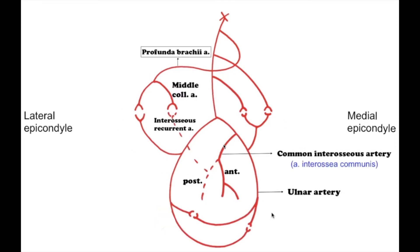They anastomose with the superior and inferior ulnar collateral arteries — superior with the posterior one, inferior with the anterior one. The next ulnar branch is the common interosseous artery, arteria interossea communis, which has a short trunk directed toward the interosseous membrane. At the proximal border of the membrane it divides into two branches: the anterior interosseous artery, which passes along the anterior surface of the interosseous membrane, and the posterior interosseous artery, which passes through the superior orifice of the interosseous membrane to the dorsal side and gives off the interosseous recurrent artery, anastomosing with the medial collateral artery from the deep brachial artery.